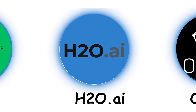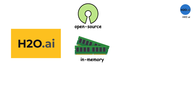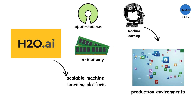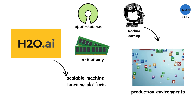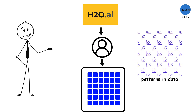H2O.AI is an open-source, in-memory, distributed, fast, and scalable machine learning platform designed to make it easier for businesses to use machine learning in production environments. H2O allows users to fit thousands of potential models as part of discovering patterns in data.